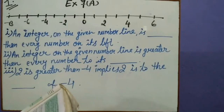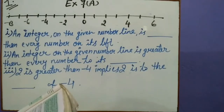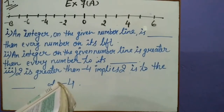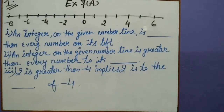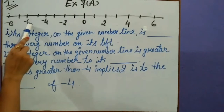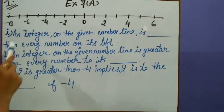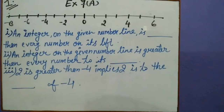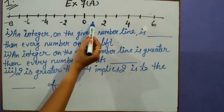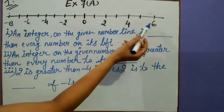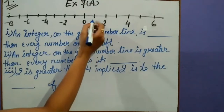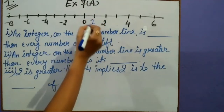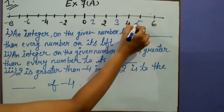Let us do Exercise 7a, Question number 1: Fill in the blanks using the following number line. With the help of the given number line we have to fill in the blanks. We can see in the number line: 0, 2, 4, and 6 are shown, which means 1, 3, and 5 are also there. Similarly, minus 1, minus 2, minus 3 is missing, minus 4, minus 5 is missing, minus 6 and minus 7.